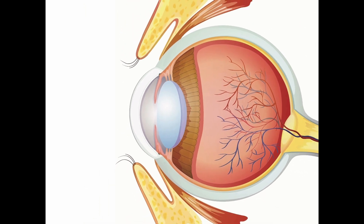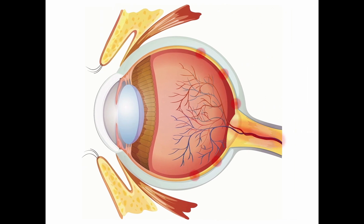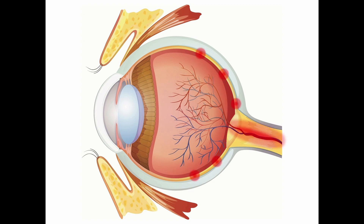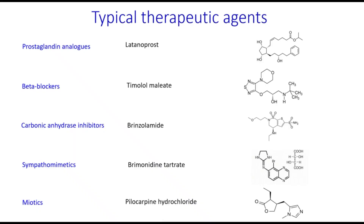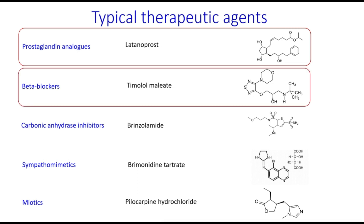This continuously increased pressure causes irreversible damage to the optic nerve. There are several types of therapeutic agents that are used to treat glaucoma. These include prostaglandin analogues, beta blockers,